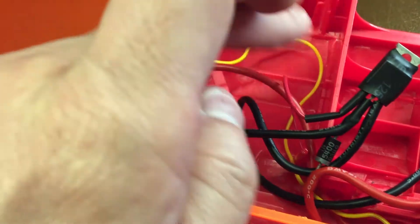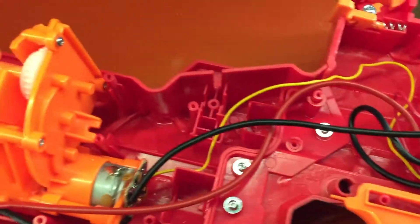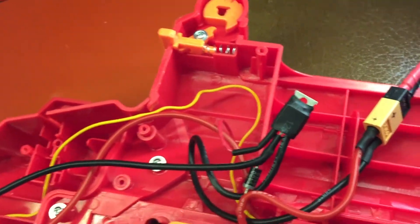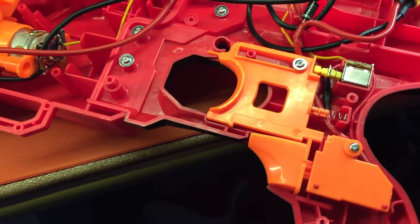Or if you want to over engineer it because you're that type of builder, then you get a bigger heat sink and you mount the MOSFET to that and then you mount the heat sink to the inside of the shell, because there's a lot of empty space in the Nemesis. This is actually a pretty easy shell to work with, I'll be honest.